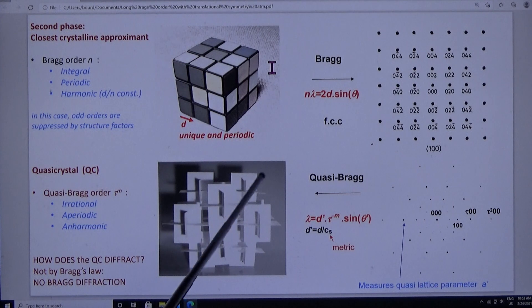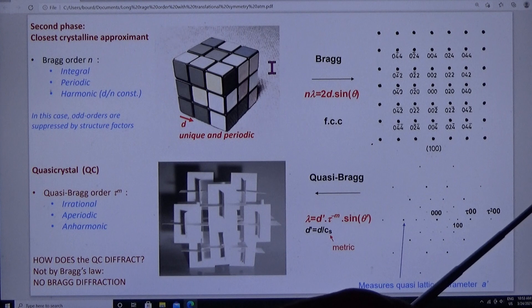The quasicrystal is in a different ballpark. n is equal to 0, 1, tau, tau squared, tau cubed, tau to the fourth.